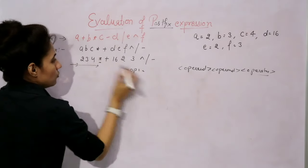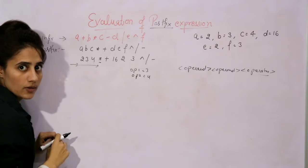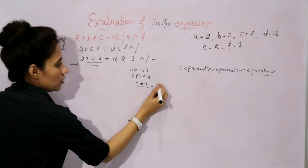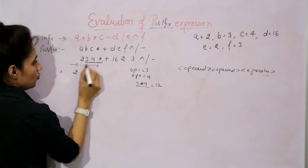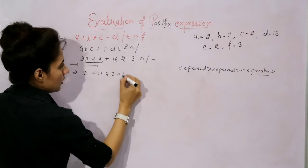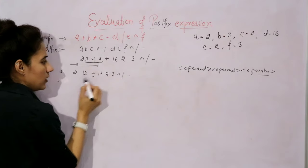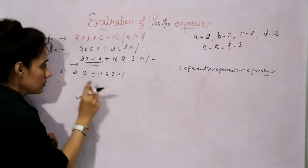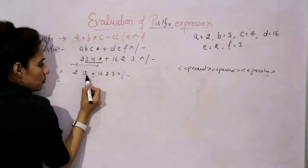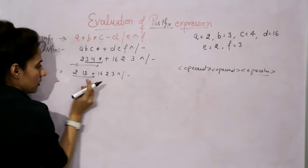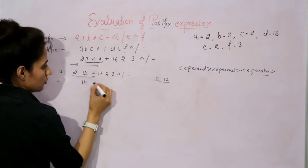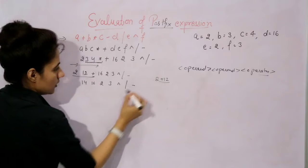For the first operator found — multiplication — operand one is three and operand two is four. Three into four equals twelve. Substitute twelve here. Now the expression becomes: 2, 12, plus, 16, 2, 3, exponent, divide, minus. In the next scan, the first operator is plus. Before this plus, one operand is 2 and one is 12, so two plus twelve equals fourteen. Now the expression is: 14, 16, 2, 3, exponent, divide, minus.